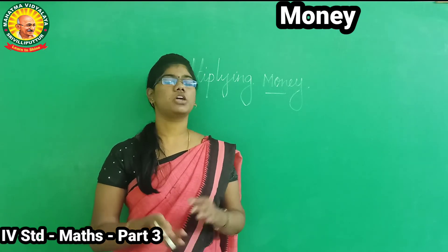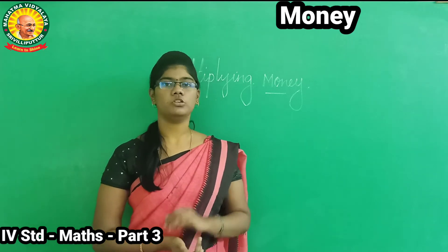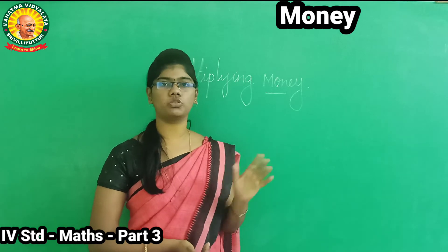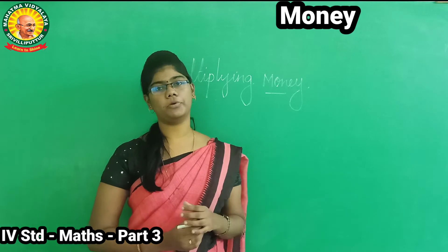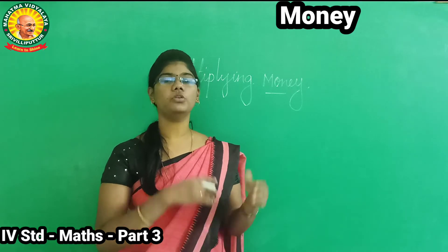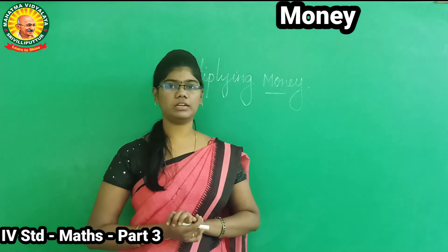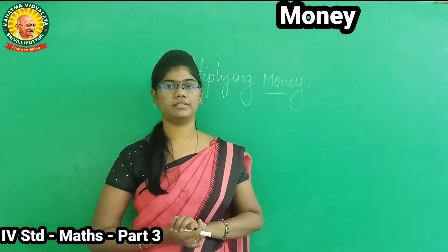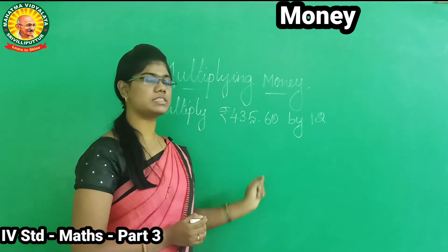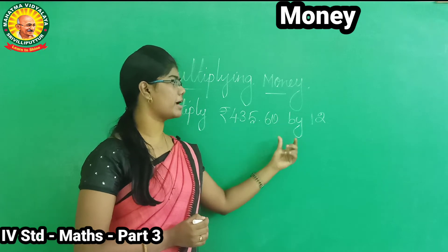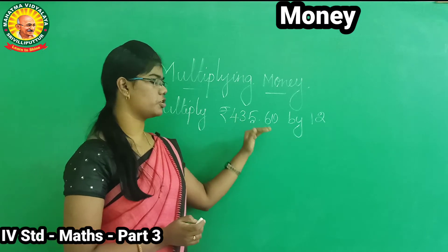So, how do we apply the method? If we follow the method, we can multiply. The first problem is: multiply 435 rupees 65 paise by 12.